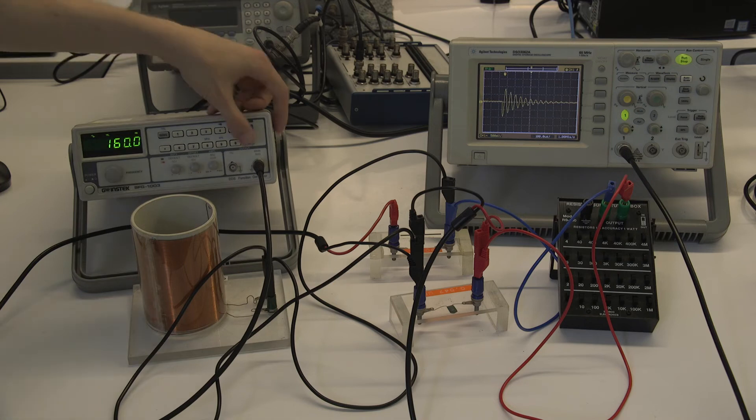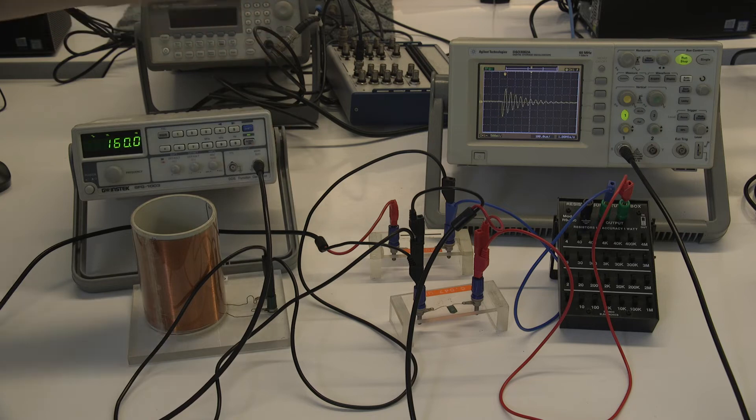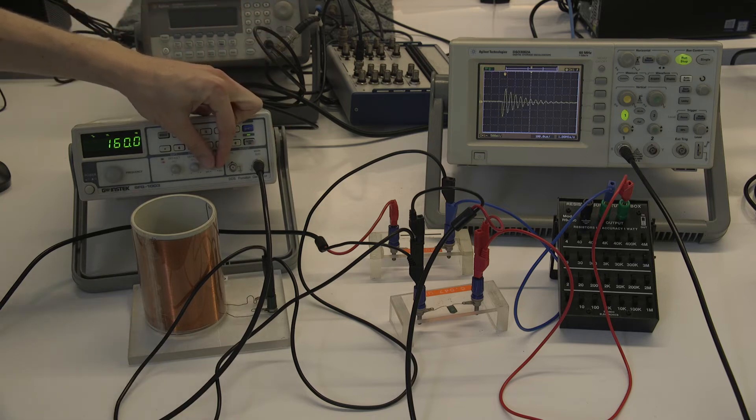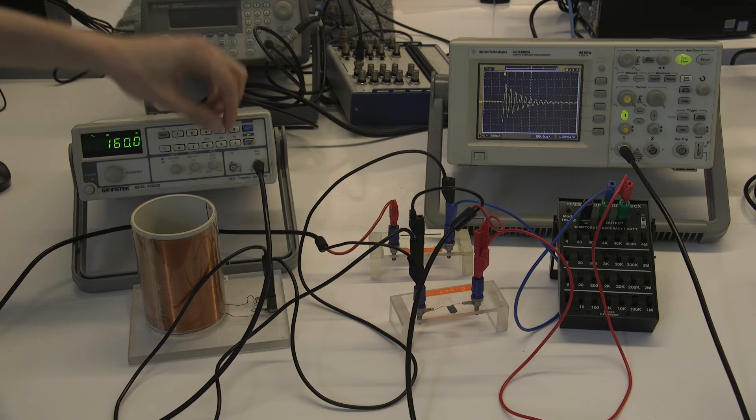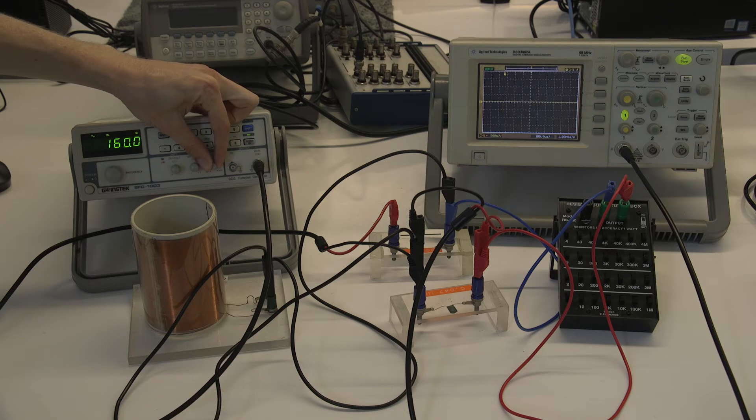Okay, you can also turn the output on and off with the button here. So sometimes if you're not seeing any signal, it's because your output's not on. And you can also adjust the amplitude of the signal, so how large are the voltages that it's outputting. And you can see if I change that, what's on the oscilloscope also changes.